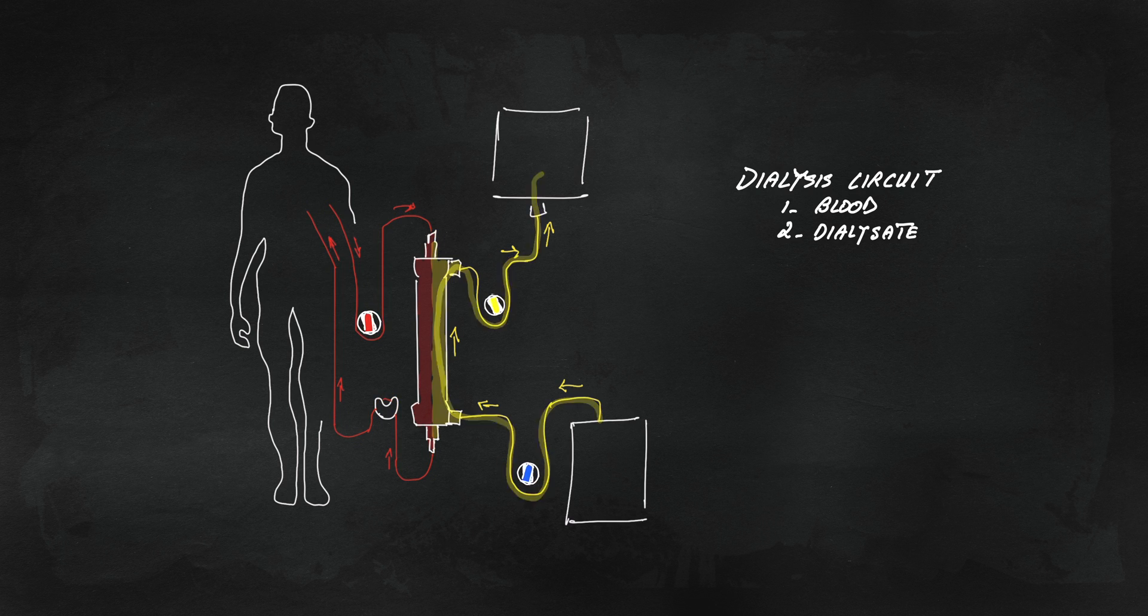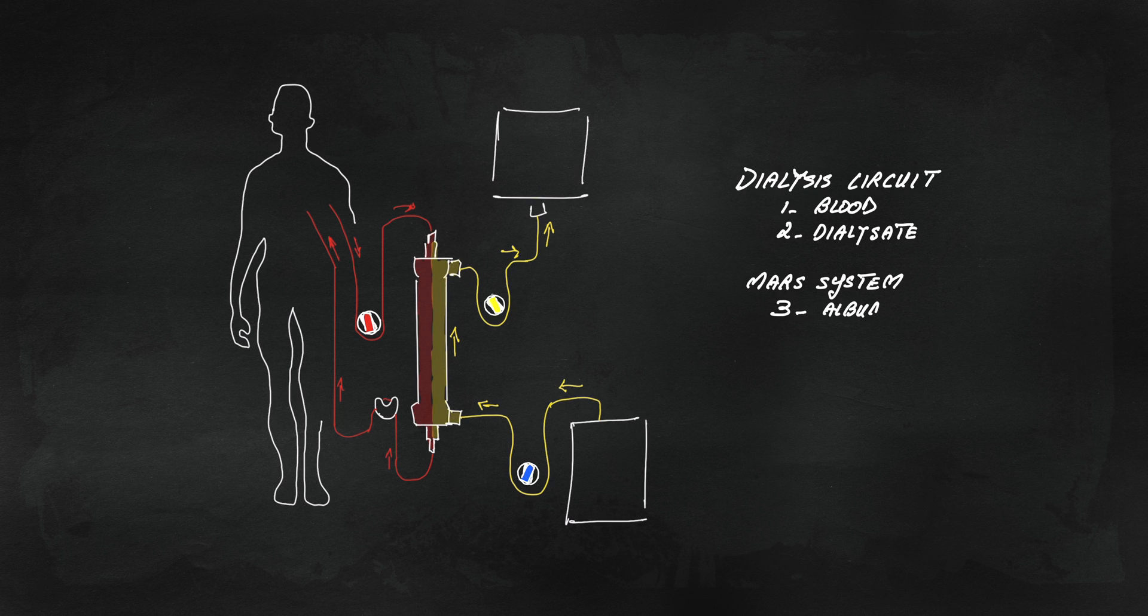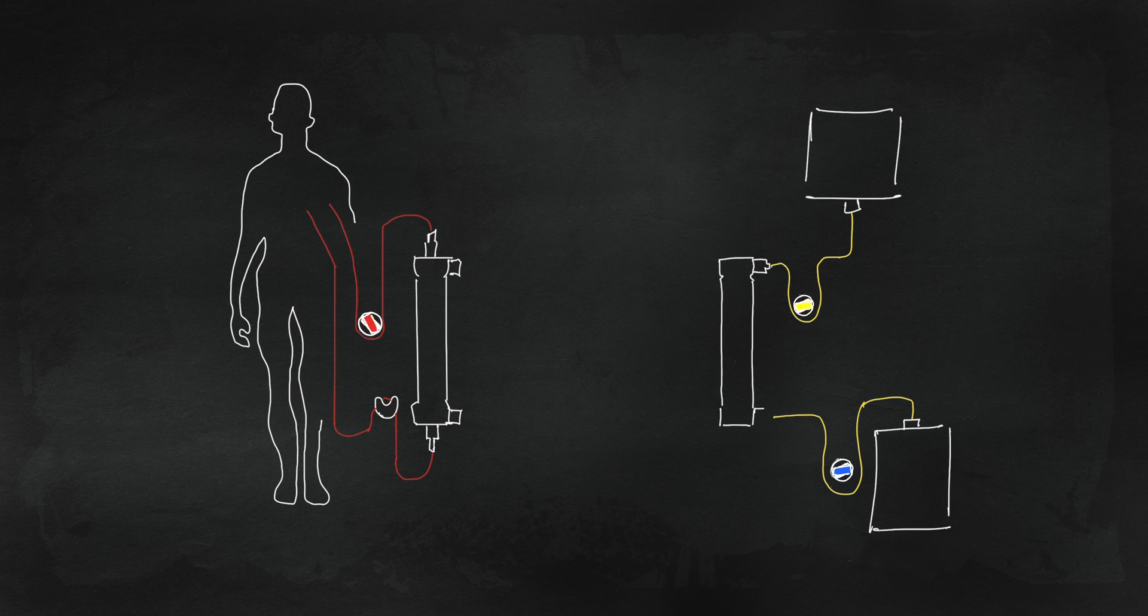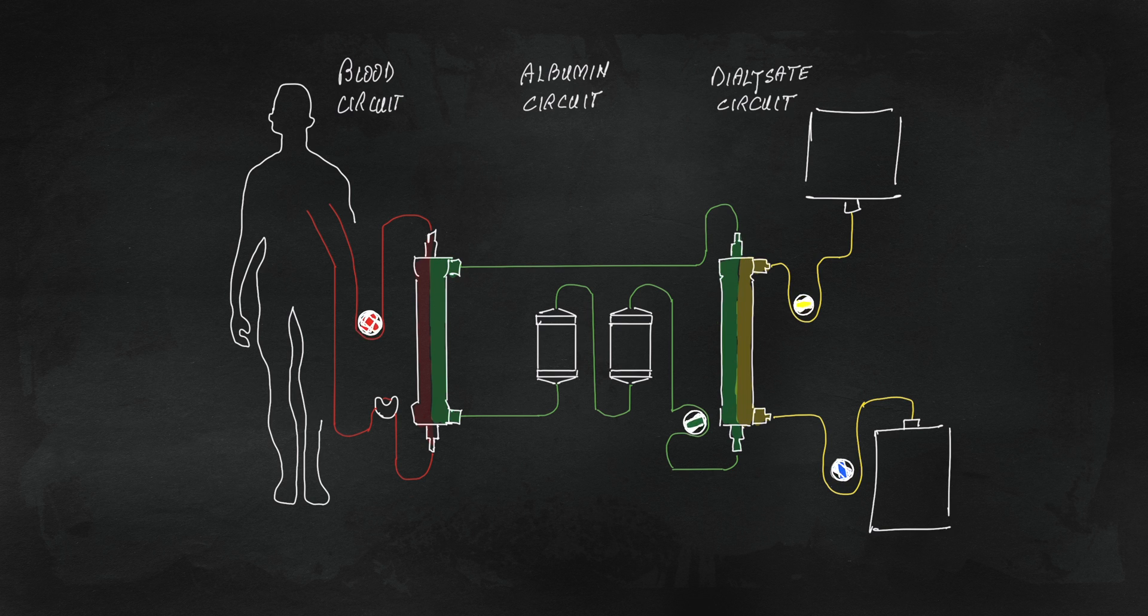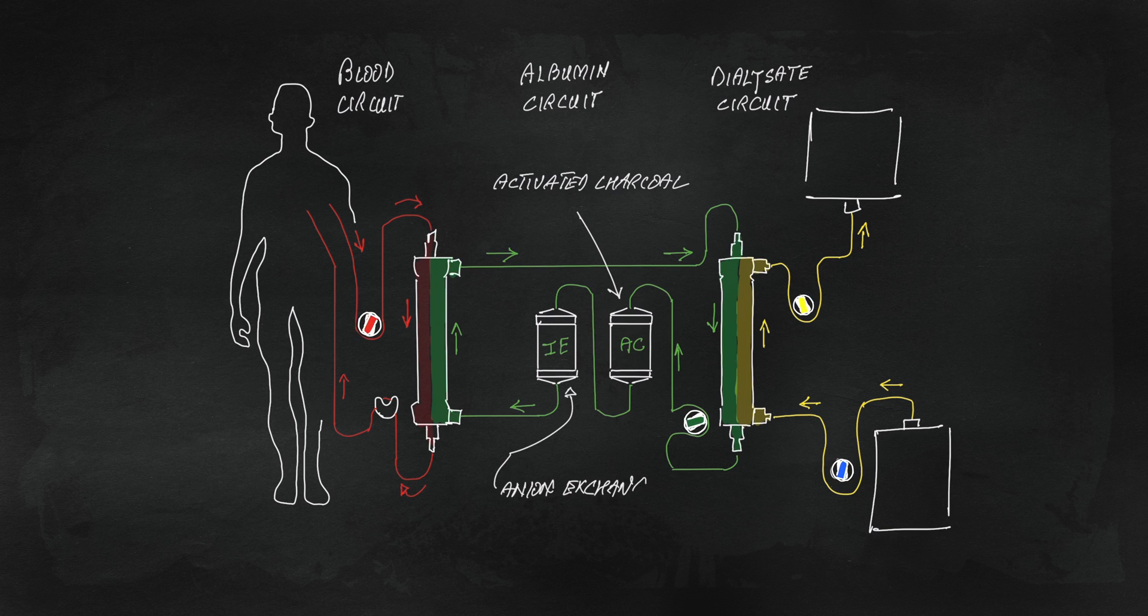With MARS, a third circuit is added, which sits between the blood and dialysate. So in effect, albumin circuit is in contact with patient's blood on one side and regular dialysis on the other side. Within the albumin circuit, we have activated carbon and anion-exchange resin filters. To recap, we have the blood circuit, the albumin circuit which is a closed circuit, and dialysis circuit.